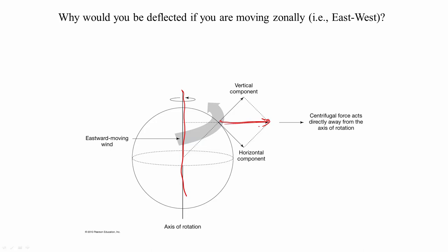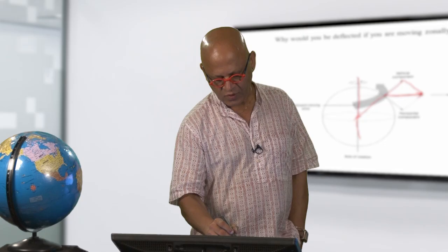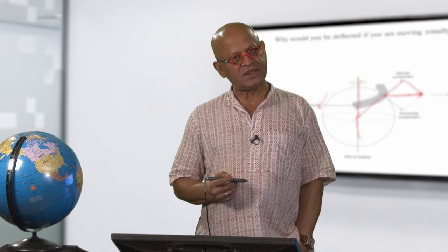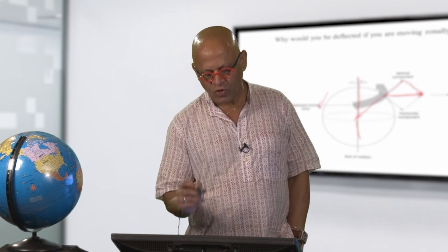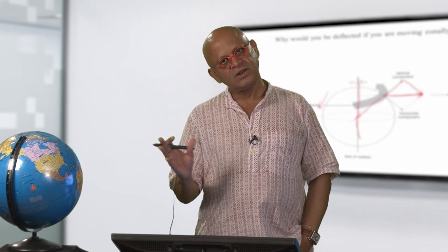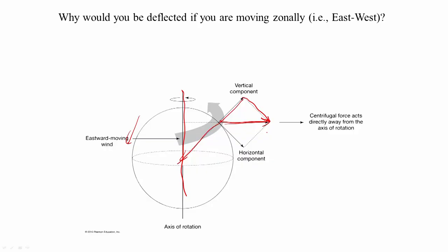If you have not done physics, do not worry about it. Basically, the centrifugal force component can be split into a component in the direction of gravity towards the center of the Earth, and a component which is towards the right whether you are moving west or east. So essentially, because of this centrifugal force, even if you are moving east to west there is a Coriolis effect that will push you to the right in the northern hemisphere and to the left in the southern hemisphere.